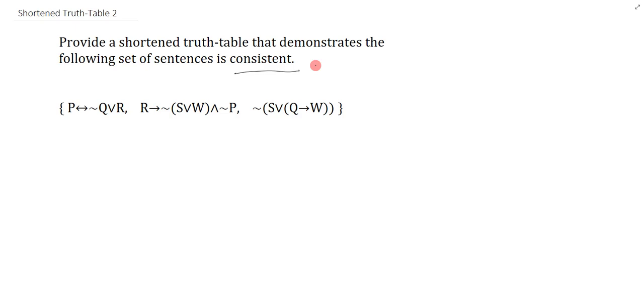So what I'm looking for is a TVA that makes every sentence here - sentence one, two, and three - true. The first place to start is always to identify the main connective. The first premise, the main connective here is the biconditional. The second premise, the main connective is the conditional because the arrows dominate over everything. And the final sentence here, the main connective is the negation because these are all in the scope of brackets, so it's got to be the negation that ties them all together.